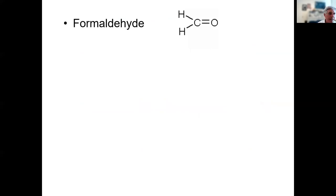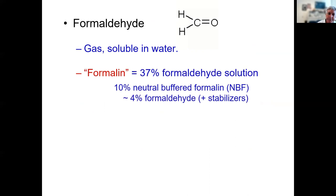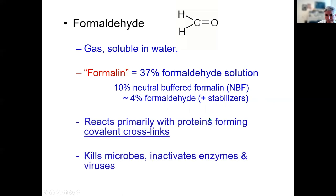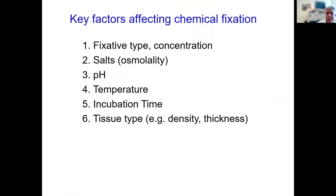The most common fixative is formaldehyde — the smallest aldehyde, a gas soluble in water. A saturated 37% solution is called formalin. This is usually diluted to 10% neutral buffered formalin (NBF), which is a final concentration of 4% formaldehyde. This is what most labs routinely use. Primarily, it forms covalent cross-links between amino acids and proteins, stabilizing and hardening tissue as well as inactivating enzymes and killing microbes.